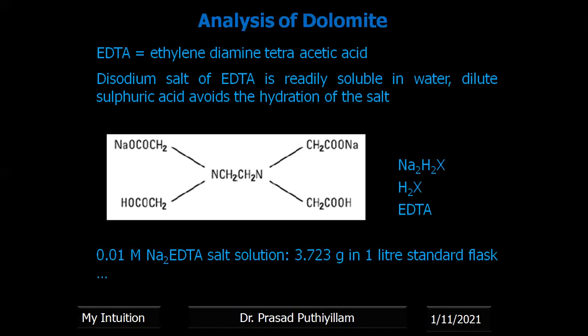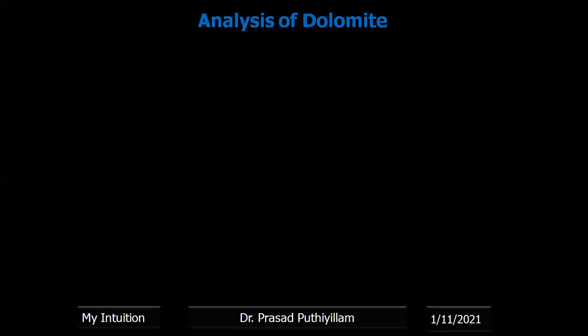A 0.01 molar disodium salt of EDTA can be prepared by dissolving 3.723 grams in a one-liter standard flask by adding sulfuric acid and diluting with water.